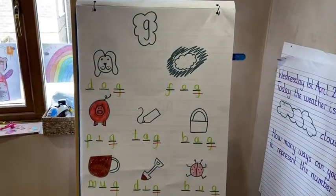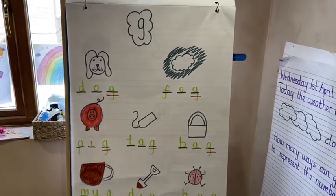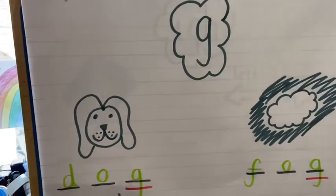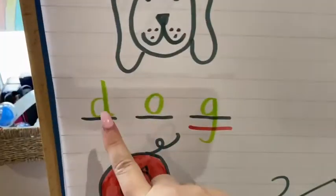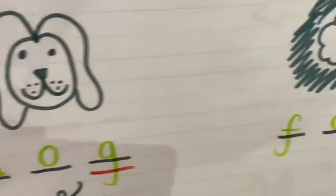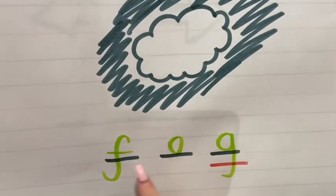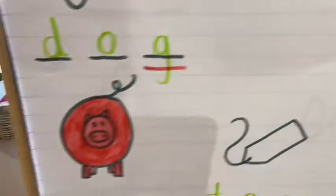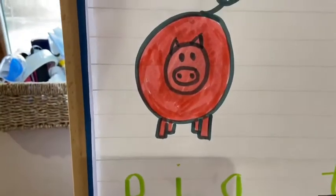Right guys, now you've had a little go on your own, we're going to go through it all together. So first picture: dog, d-o-g, dog. Next picture: fog, f-o-g, fog. Next picture: pig, p-i-g, pig.